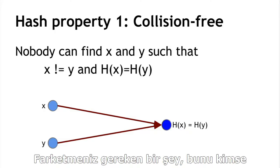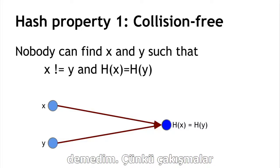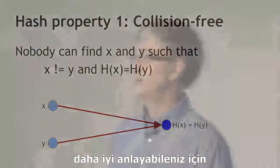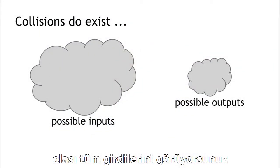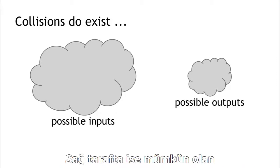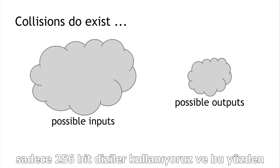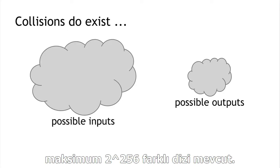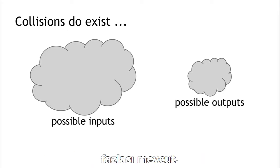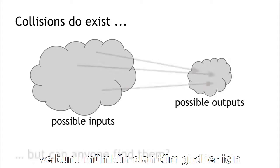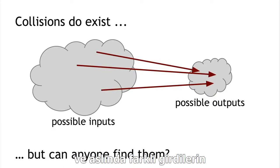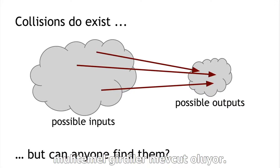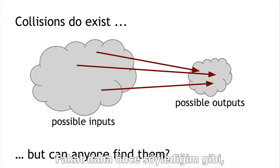I said nobody can find a collision — I didn't say that there is no collision. Because if you think about it, there has to be a collision. Collisions do exist. The possible inputs can be a string of any size, while the outputs must be a 256-bit string, so there are only 2^256 possibilities on the output side. As you map all the inputs to the right, it has to get crowded — there will be a very large number of possible inputs that map to any particular output.